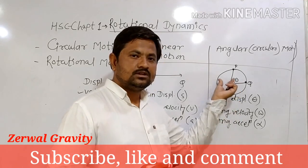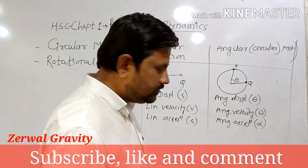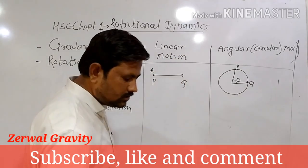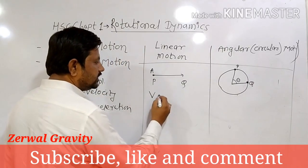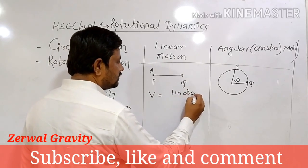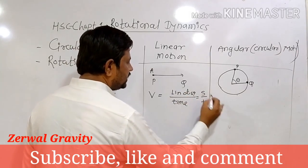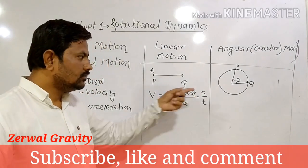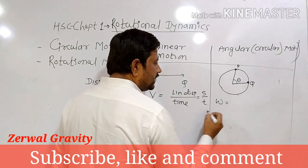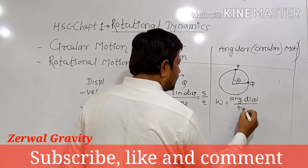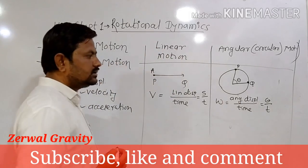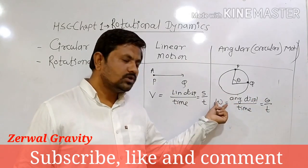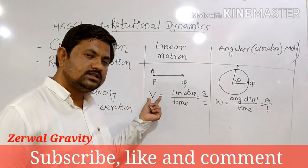Now we will go through some formulae. What is linear velocity? It is linear displacement upon time — that is, S upon T. The rate of change of linear displacement with respect to time is called linear velocity. What is angular velocity? Angular velocity is denoted by omega and equals angular displacement upon time, that is theta upon T. The rate of change of angular displacement with respect to time is called angular velocity. Both have the same definition, but the quantities differ between linear and angular motion.